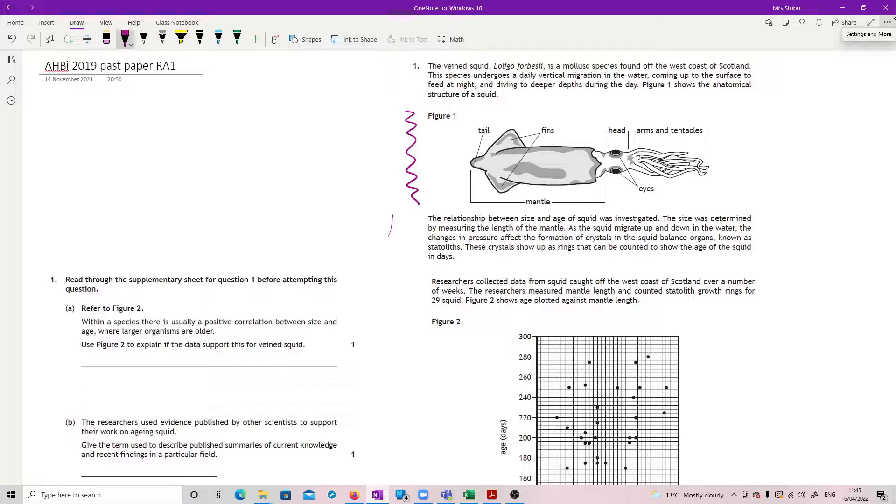The veined squid is a mollusk species found off the west coast of Scotland. This species undergoes a daily vertical migration in the water, coming up to the surface to feed at night and diving to deeper depths during the day. Figure 1 shows the anatomical structure of a squid. The relationship between size and age of squid was investigated. Size was determined by measuring the length of the mantle, this section here.